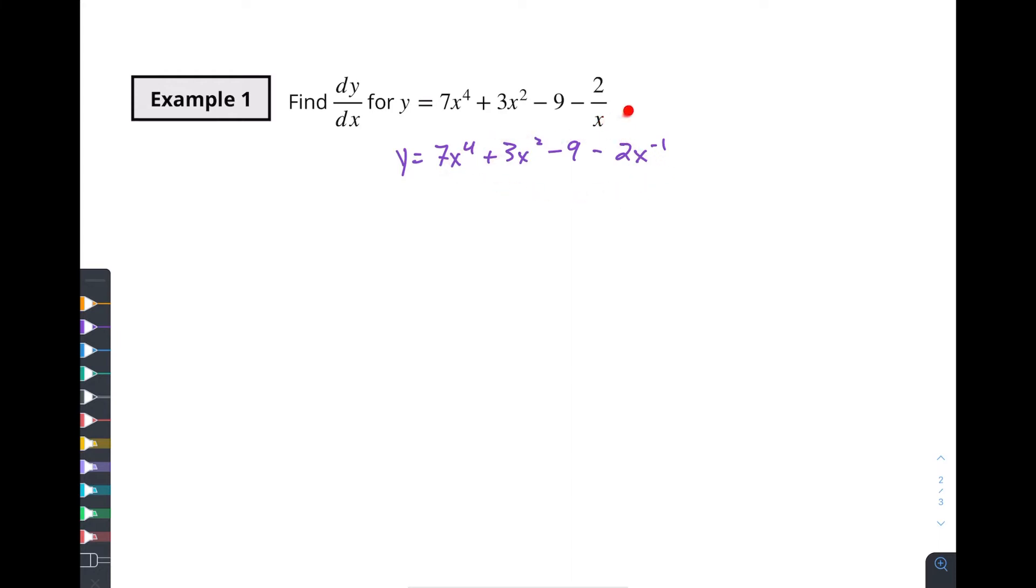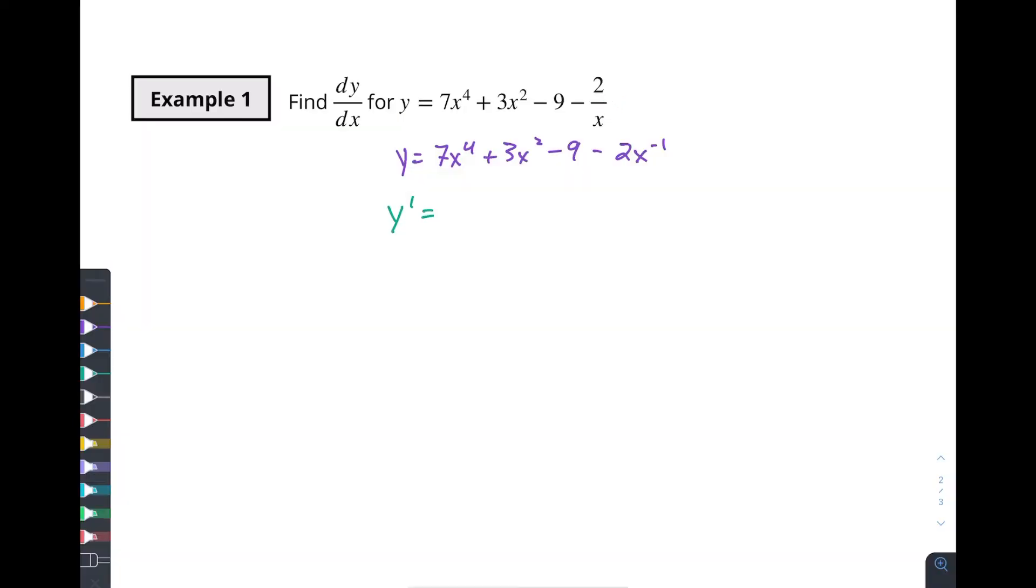And all I did was take this x. I changed the exponent to a negative 1 to bring it out. And now I can do all of my derivative rules. And at this point, I'm going to actually change over to y prime. And it's important to do that because, again, as you're working down your paper, it's implied that this equals this, which equals this, and so on.